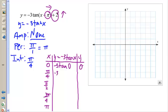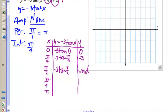At π/4: negative 3 times tan(π/4). Tangent of π/4 is 1, so this gives negative 3. At π/2: negative 3 times tan(π/2). At π/2 the x-coordinate is 0, so we are undefined — that's an asymptote. At 3π/4: negative 3 times tan(3π/4). That tangent is negative 1, and negative 1 times negative 3 is positive 3. And lastly at π: 3 times tan(π), looking at y over x, that's 0.